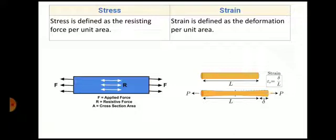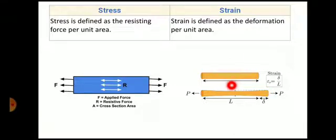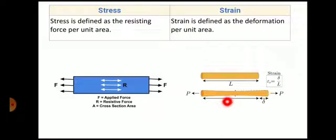Now strain. Strain is defined as deformation per unit length. Here you can see a body in yellow color. The original length of this body is L. We are applying a force over it, due to which its length is changed by delta. So strain is defined as this deformation per unit length.